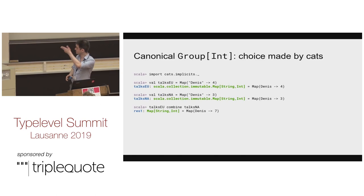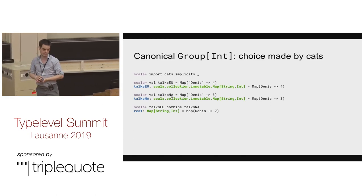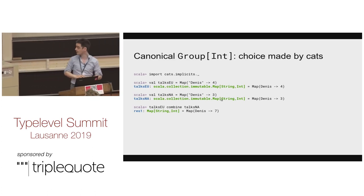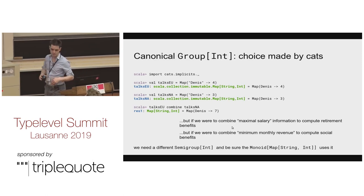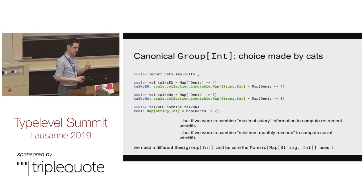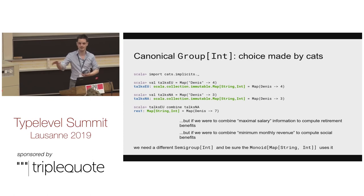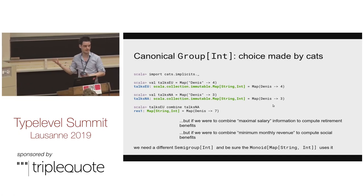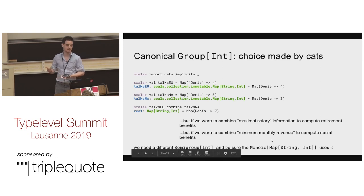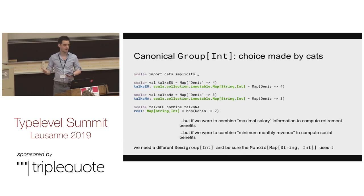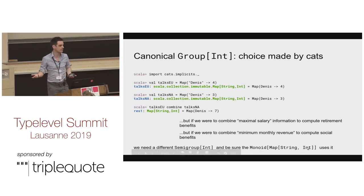For example: the number of talks I give in the EU and North America, represented as a map — combining them means adding counts, and that's the right thing. But if you're looking at maximum salary over your career for retirement benefits, you'd use the max operation, not sum. And for healthcare subsidies based on minimum revenue over three years, you'd use min. So this is a problem — when we derive the monoid of Map[String, Int], it depends on context. I don't know the answer to that.